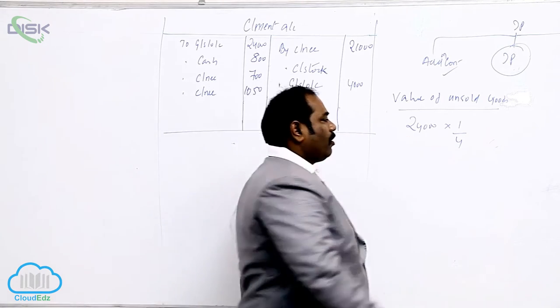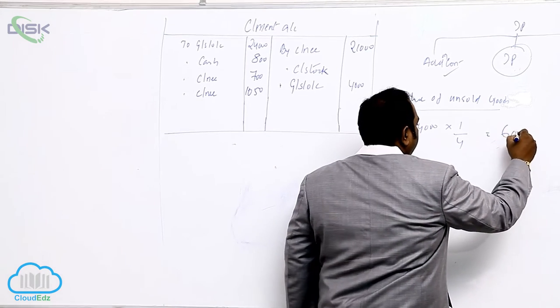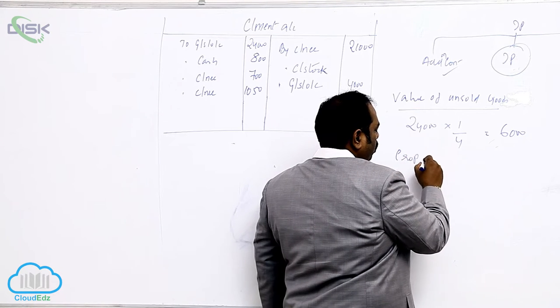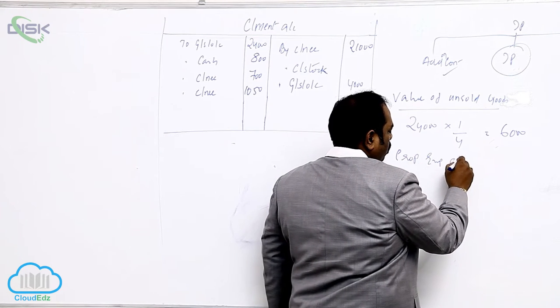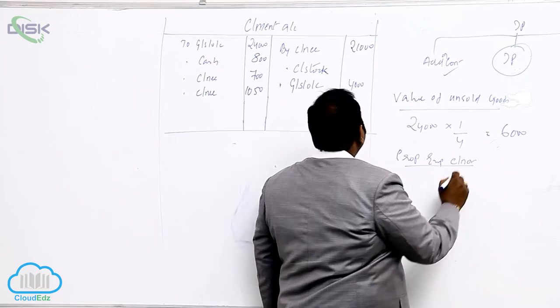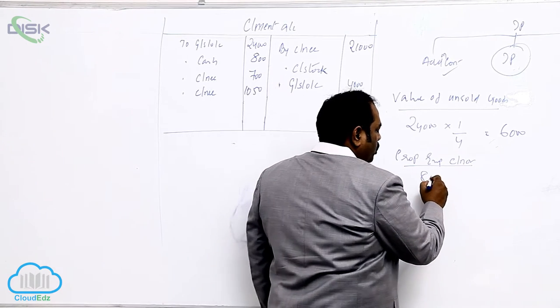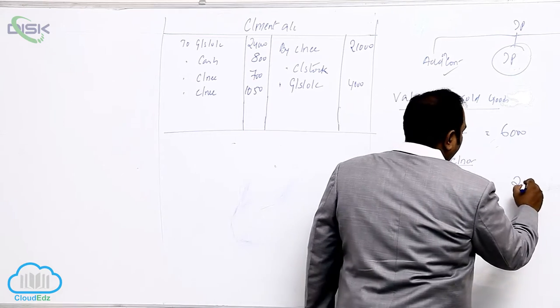Out of this 24,000, one-fourth is remaining. It is 6,000. Take proportionate expenses of consigner. What is consigner expenses they give you in the problem? 800. On this 800, it is one-fourth, that is 200.